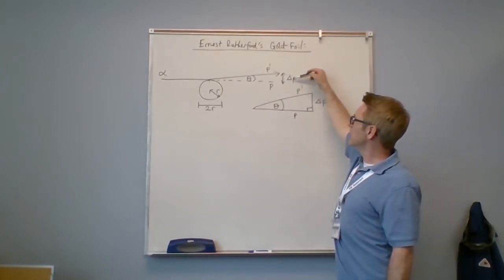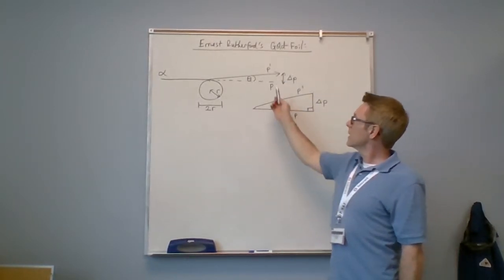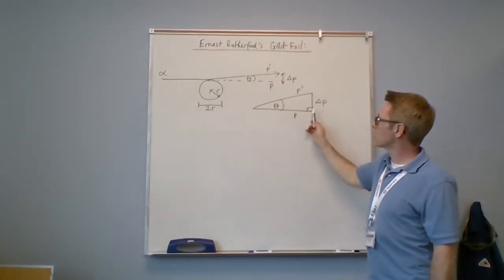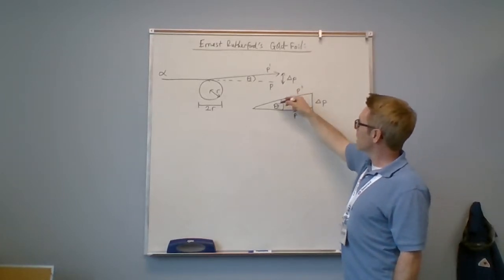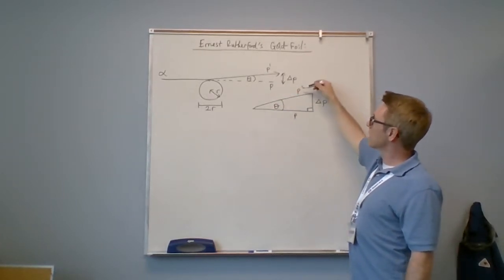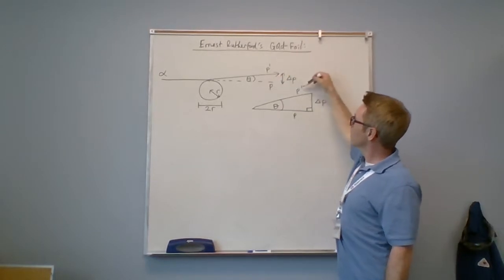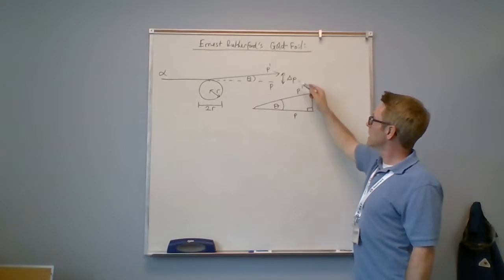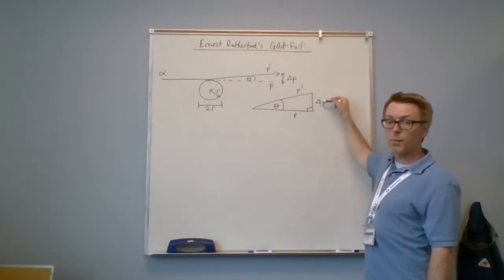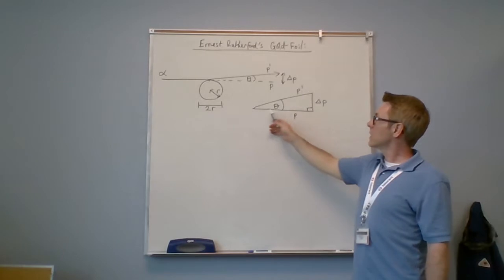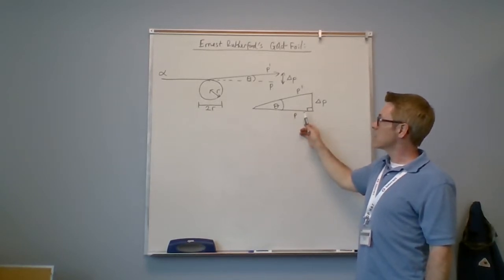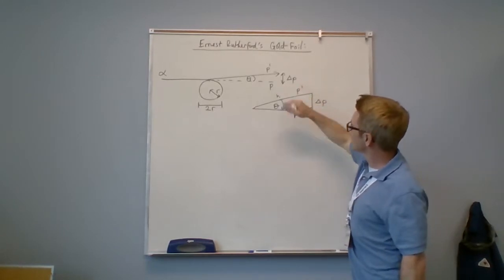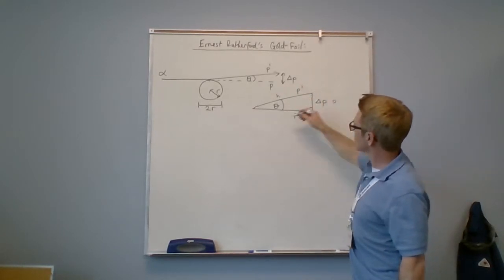If we look at this expectation in this triangle and expand it, it's a right triangle. The hypotenuse, the longest side, is P prime. The angle is theta, opposite the angle is delta P, so this is the opposite, and the other side is the adjacent. This is P, so we have the hypotenuse, the opposite, and the adjacent.